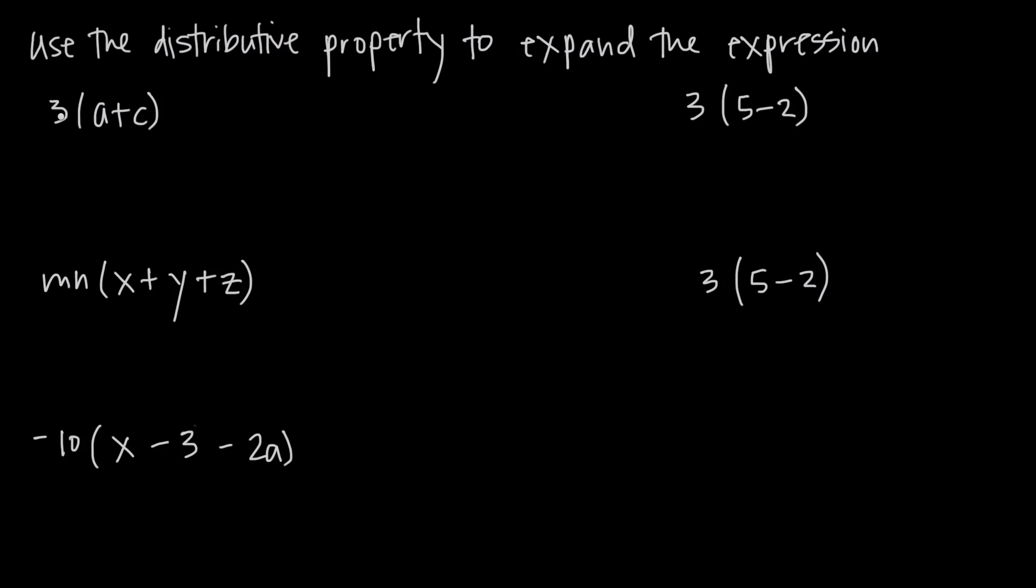In this first one here we have 3 times the quantity a plus c. The distributive property tells us that we can distribute the 3 across this quantity. What we mean by distribute is that we're going to multiply the 3 by the a to get 3a, and we're always going to keep our sign in the middle, so we get plus, and then multiply the 3 by the c to get 3c. So 3 times the quantity a plus c is 3a plus 3c.